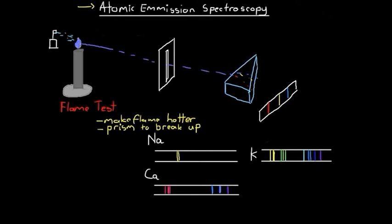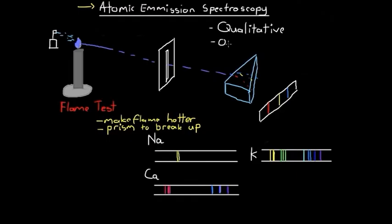Atomic emission spectroscopy is therefore a form of qualitative analysis — it allows us to identify the types of substances we're dealing with. We're not figuring out amounts or concentrations; we're just figuring out what it is we're looking at. Although atoms can emit all different types of electromagnetic radiation when de-excited, atomic emission spectroscopy in this form only deals with visible light. We're not seeing UV light or infrared or anything like that.